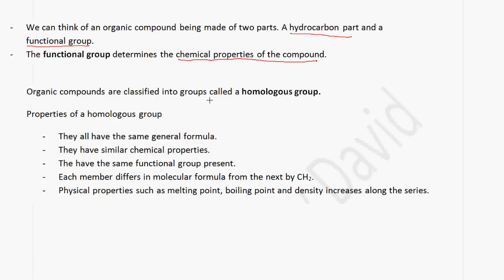Organic compounds can be classified into groups called a homologous group. This homologous group has several properties: they all have the same general formula; they have similar chemical properties because they all have the same functional group present; and each member differs in molecular formula from the next by CH2. The physical properties such as melting point, boiling point, and density increase along the series.